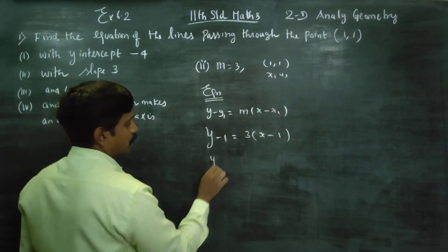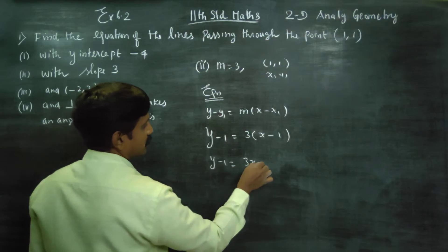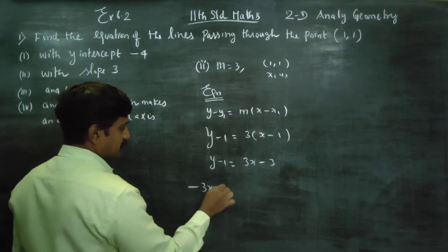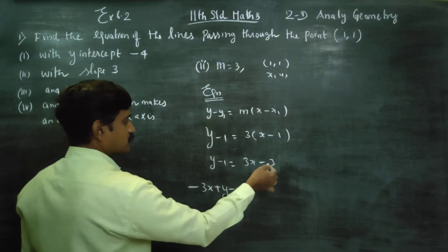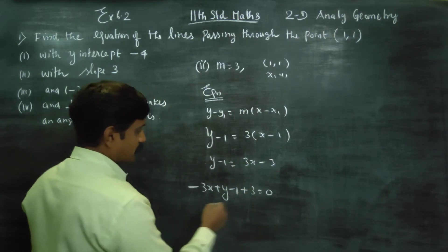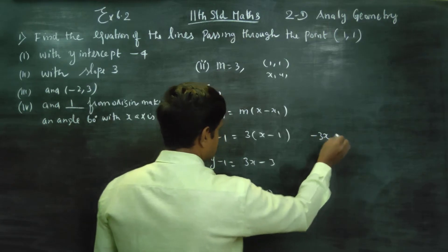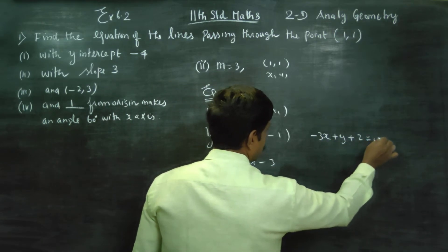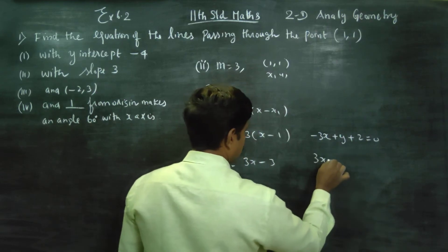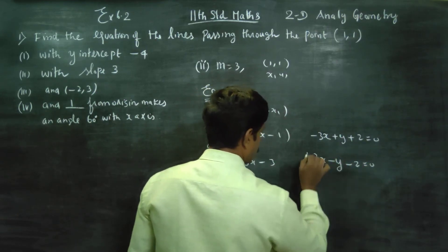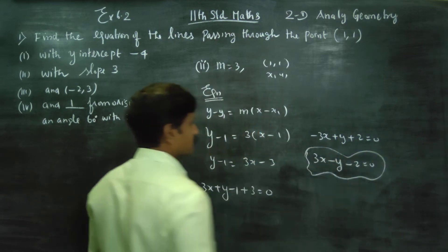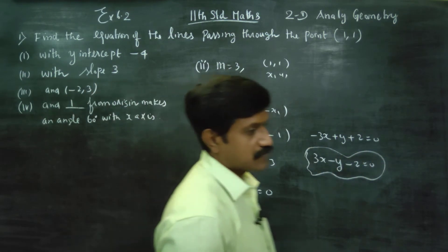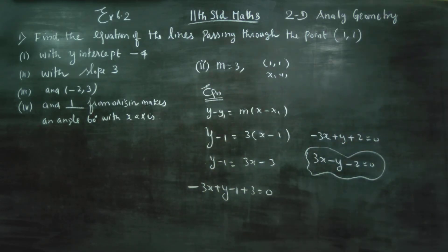Substituting: y − 1 = 3(x − 1), which gives 3x − 3. Simplifying: −3x + y + 1 − 3 = 0, so 3x − y − 2 = 0 is the equation of the straight line. This is the second part — 10th standard level, using the one-point slope formula.